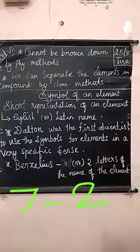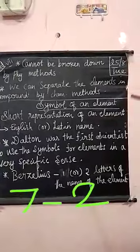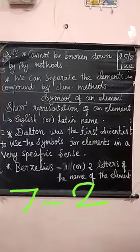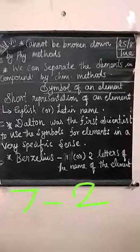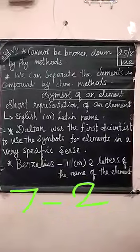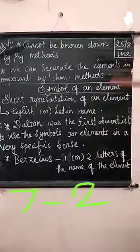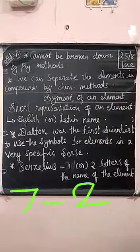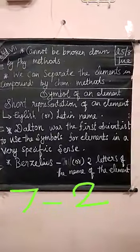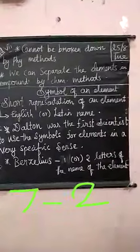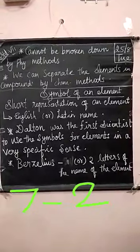We cannot break down sodium chloride into sodium and chlorine by physical methods like filtration. So, the properties of compounds are: first, elements are combined in a fixed proportion to form the compound; second, the properties of the compound are entirely different from the properties of its constituent elements; third, we cannot break down the compound by physical methods, but we can separate the elements by chemical methods.